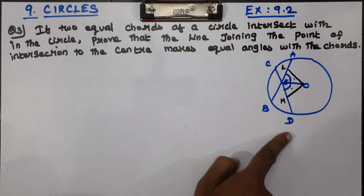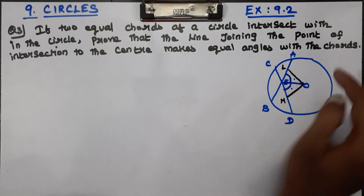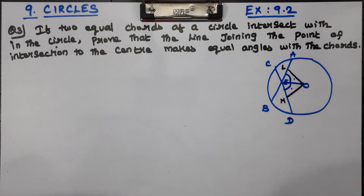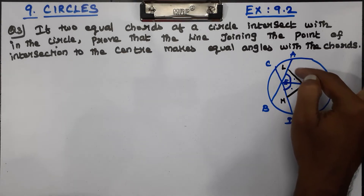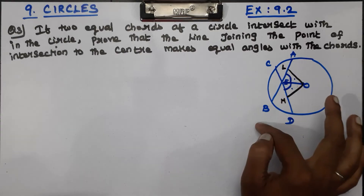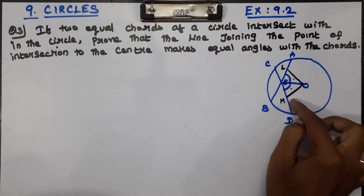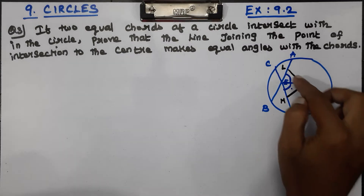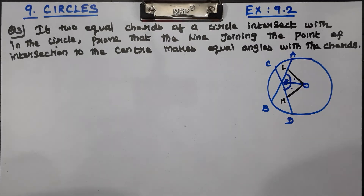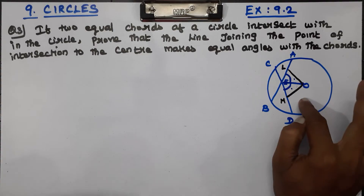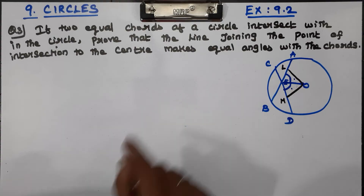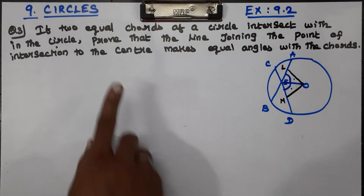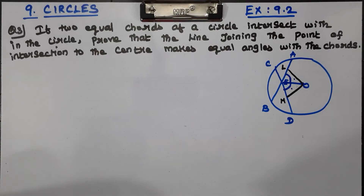AB and CD are equal chords. AD, E is equal. The triangles are the same — the same congruent triangles.